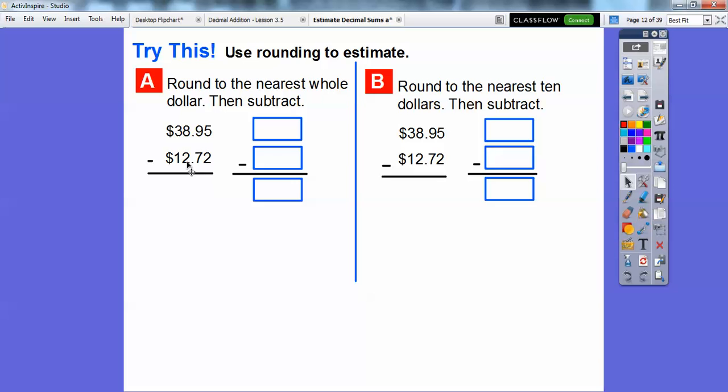And then we'll round this 2. This is going to round up because of the 7, because 7 is greater than 5. We'll round this to 3. So this is going to round to 39, this is going to round to 13. And then when we subtract, 39 minus 13 is $26.